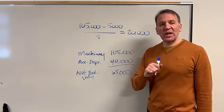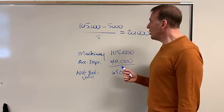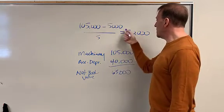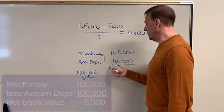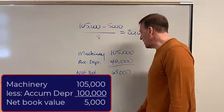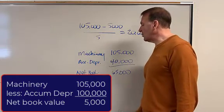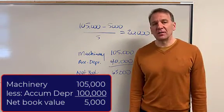Now let's jump all the way to year five. In year five, you will have five full years of depreciation. So that would be five times 20. This would be $100,000.